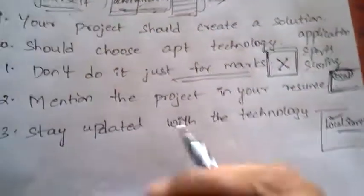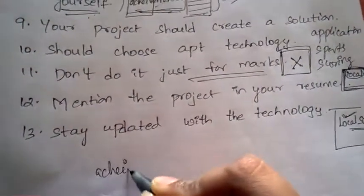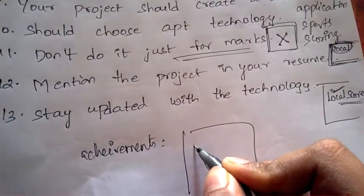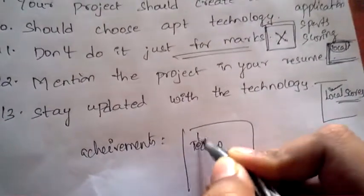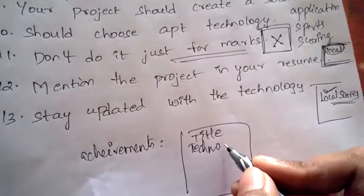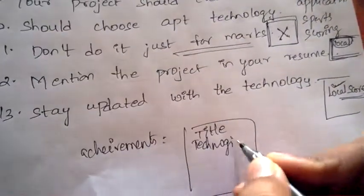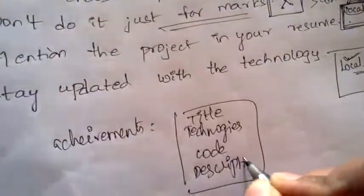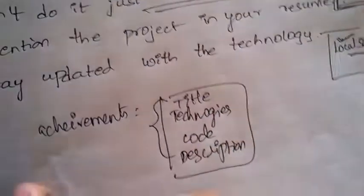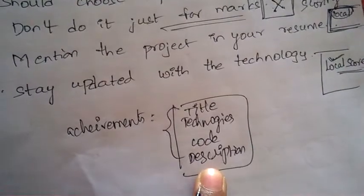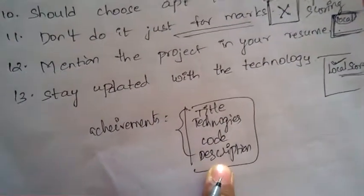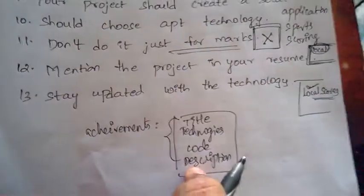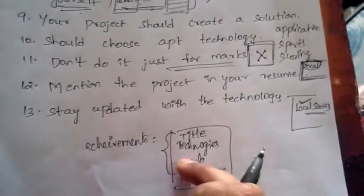Next, mention the project in your resume under achievements. Mention the title of the project, the technologies used, and two to three lines of description. This will make a good impact on the interviewer — they'll see you have good knowledge in developing a project, and you will surely be more likely to be recruited.